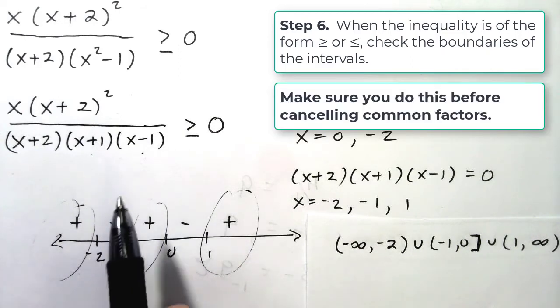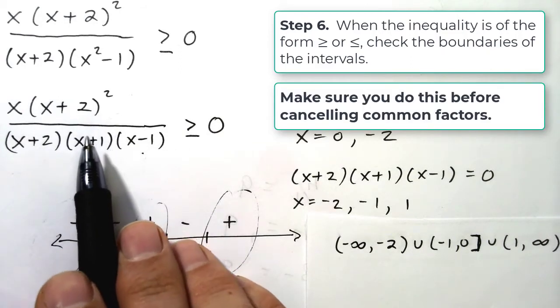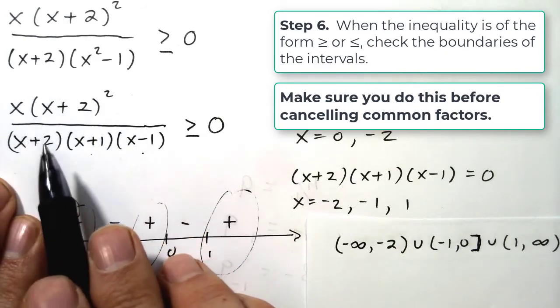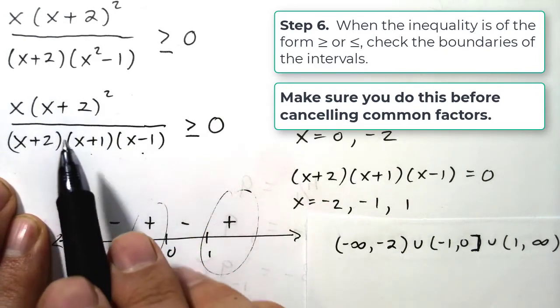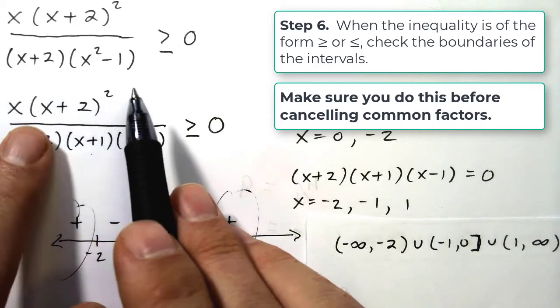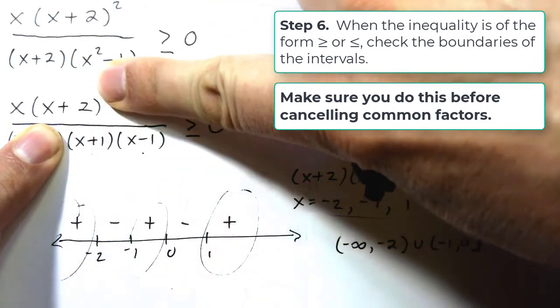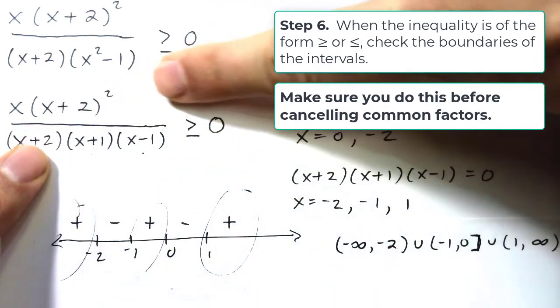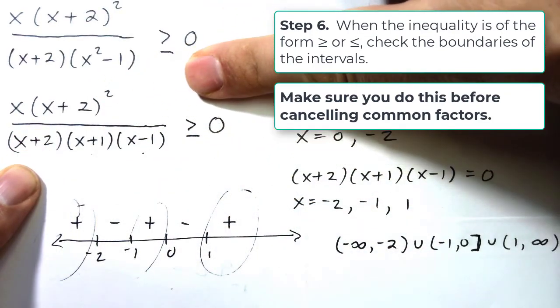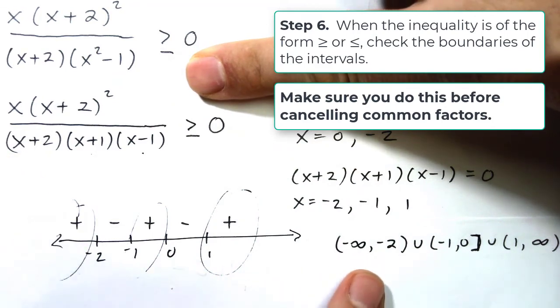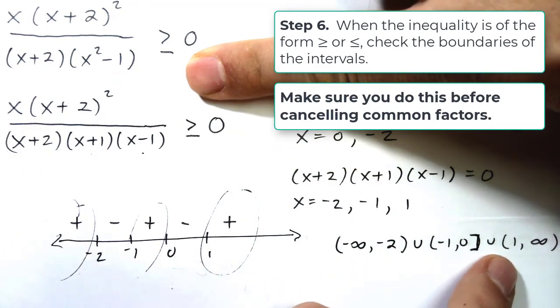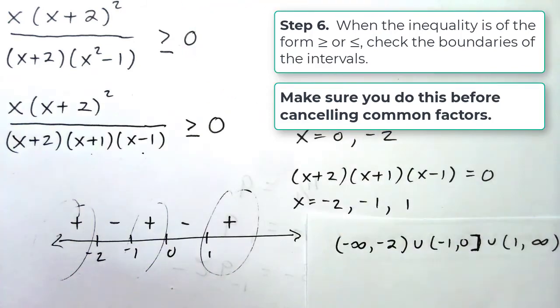Now I just want to point out that you have to be careful to do this before you've canceled any common factors. If you cancel common factors, you may hide the fact that the function's not defined at negative two. If we were to cancel these, now you wouldn't see that. So make sure you look at the unsimplified form, the uncancelled form, when you go and make these investigations at the boundaries of these intervals. So this is how we would handle the problem if it was greater than or equal to.